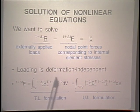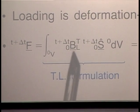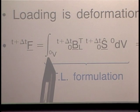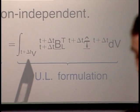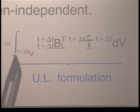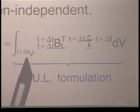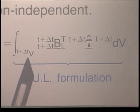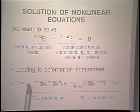Notice that F in the total Lagrangian formulation is evaluated by integrating over the original volume for a single element. For the UL formulation, F is calculated by integrating over the current volume. In the iteration, this volume would be t+delta_t v_{i-1}, as we always update this integral with the iteration counter on the right-hand side of the system of equations.